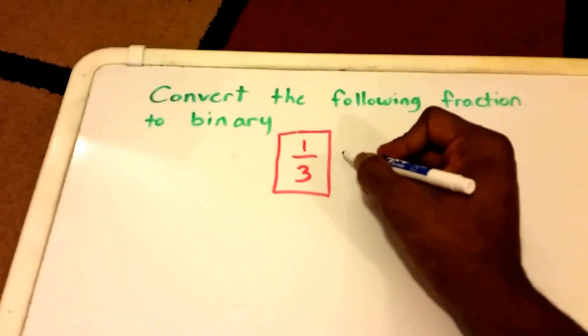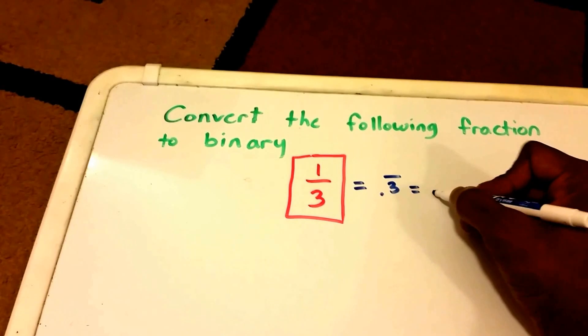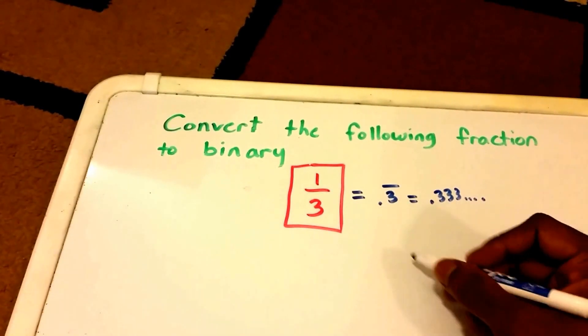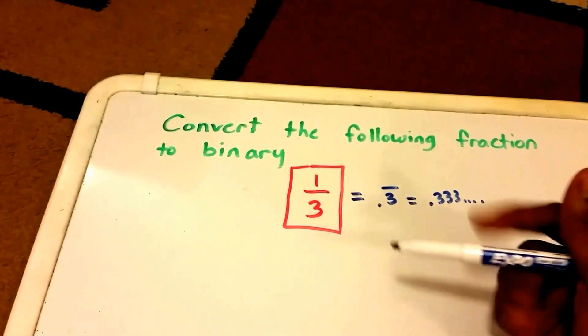I chose this because this fraction in decimal form is equal to 0.3 repeating, or 0.333... all the way to infinity. So how do you convert a number like this into binary?